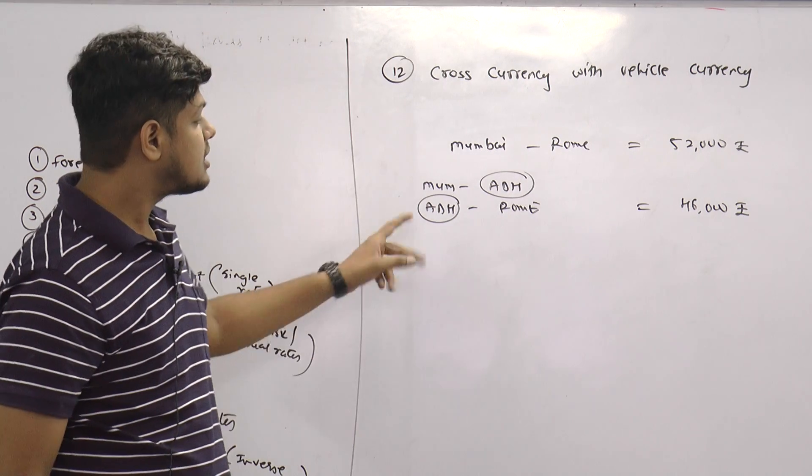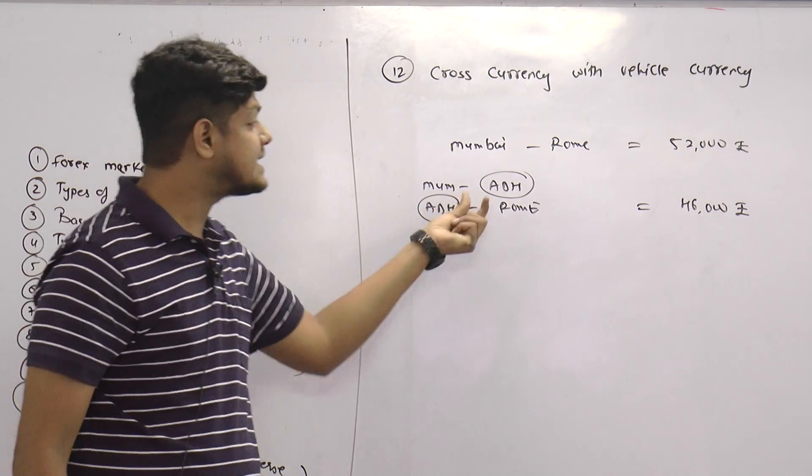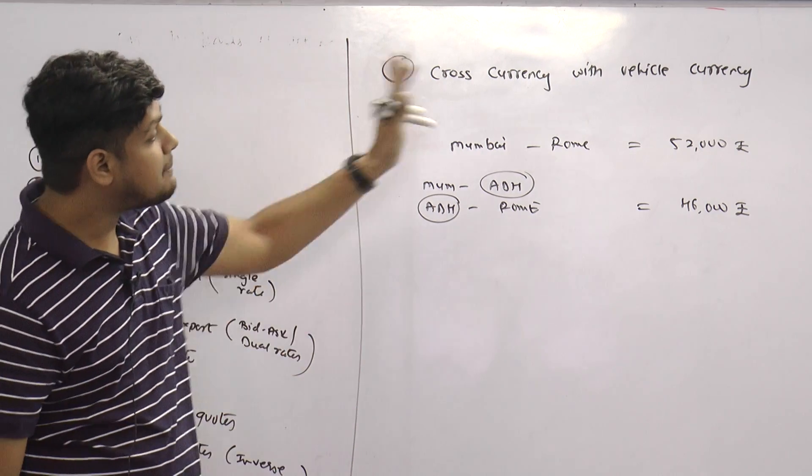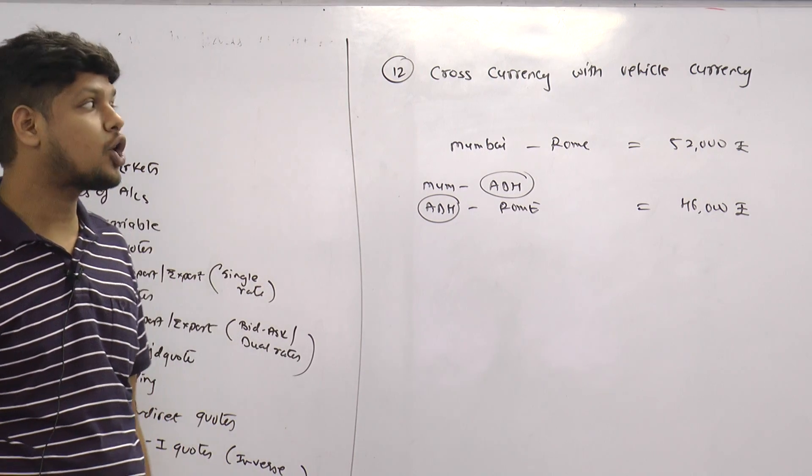So here we use a connecting route. That connecting route perhaps now I can say is replicable in the concept of cross currency.